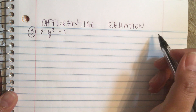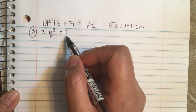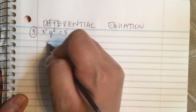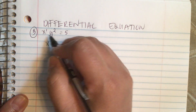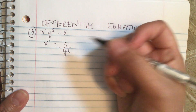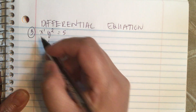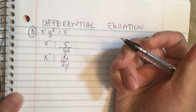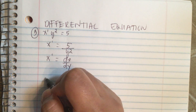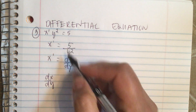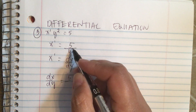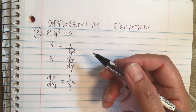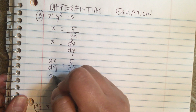We're going to do more differential equations. So x prime times y squared is equal to 5. First we divide by y squared, so we have x prime is equal to 5 over y squared. Then we transform this: x prime is equal to dx over dy, so dx over dy is equal to 5 over y squared.